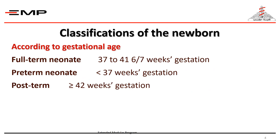Classification of the newborn. Newborns are first classified according to their gestational age. A full-term neonate is one who has completed 37 weeks of gestation inside the uterus — 37 to 41 weeks and 6 days. A pre-term is one who did not complete 37 weeks of gestation. A post-term is one who completed 42 or more weeks of gestation.